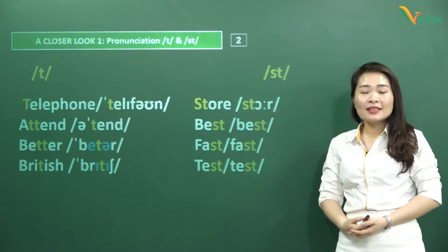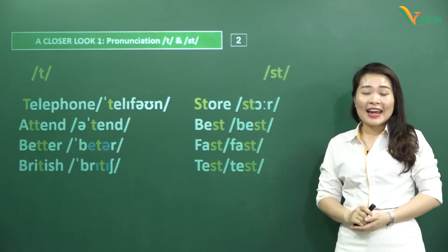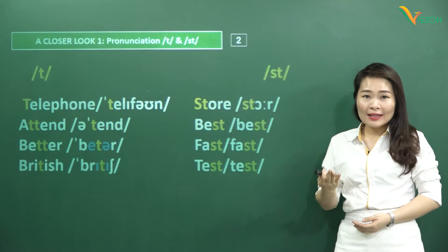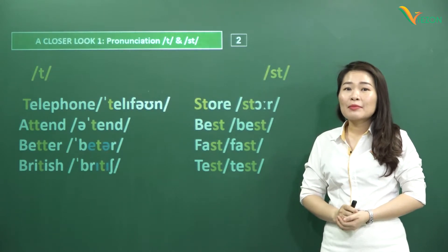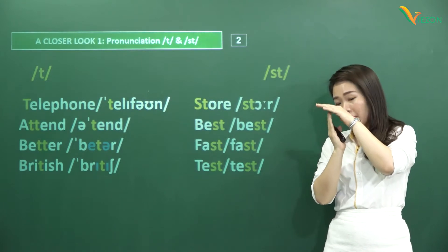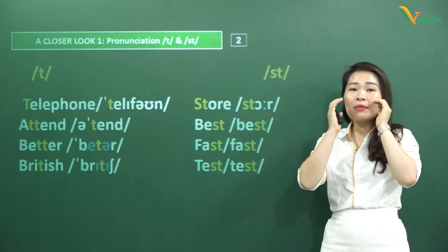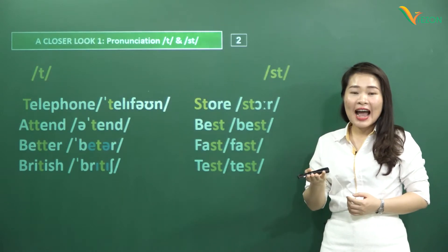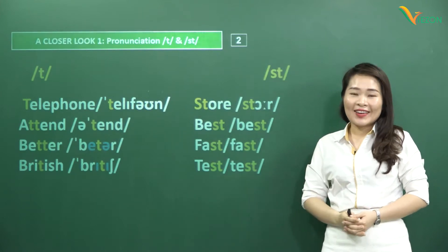This is called an aspirated sound in English, meaning that when you pronounce it, you should feel the air burst out of your mouth decisively. To pronounce the /t/ sound, the tip of your tongue must touch the upper palate of your mouth. Both sides of the tongue touch the upper jaw, and then we push the air out — but because the tongue tip is touching the palate, it holds the air back slightly.